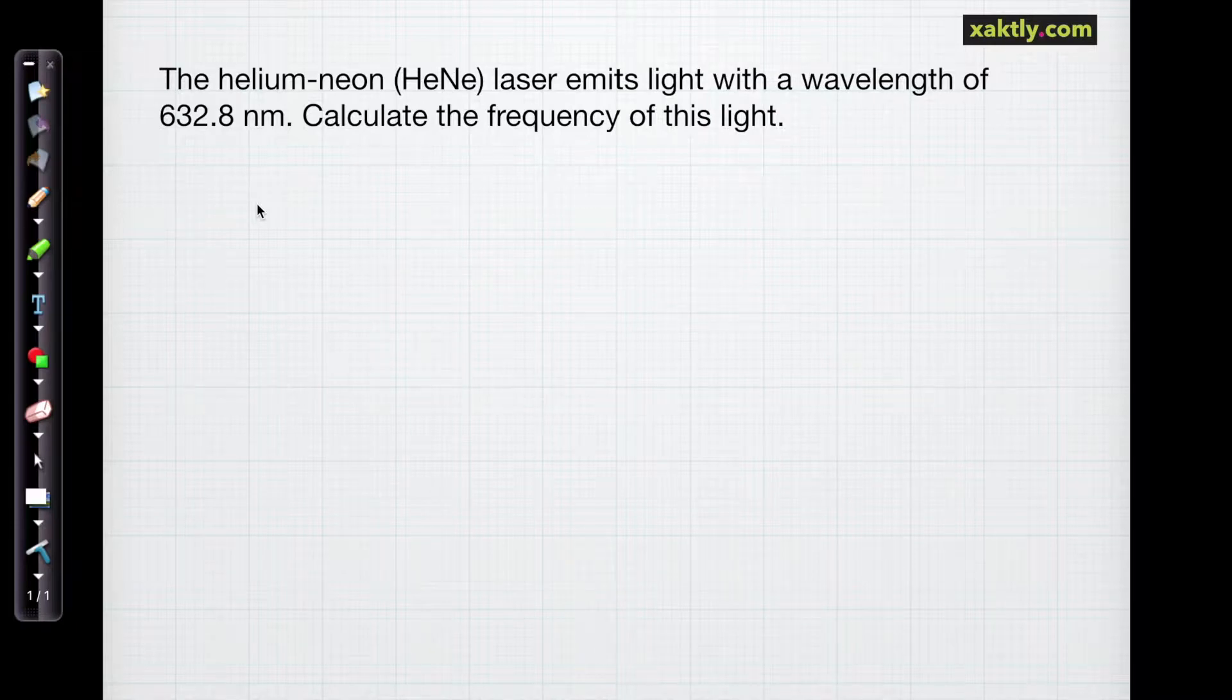In this first one we've got a helium-neon laser which emits at a wavelength of 632.8 nanometers. One of the characteristics of lasers is that they emit light in a very narrow band of frequency or wavelength. So we want to convert that to frequency.